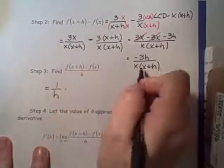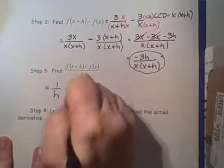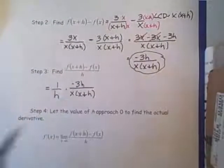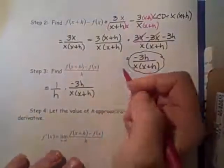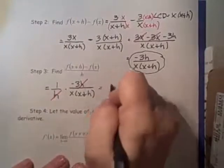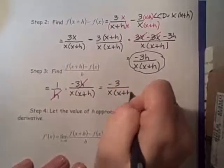I'm going to multiply what I found in step 2, which is that negative 3h over x times x plus h, by 1 over h. If I do that, see how these h's cancel out? I end up with negative 3 over x times x plus h.